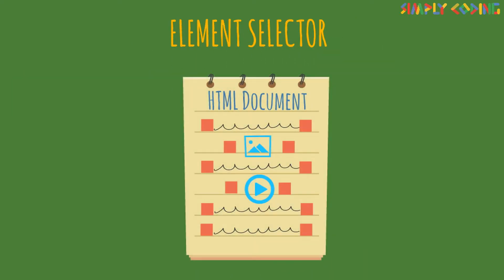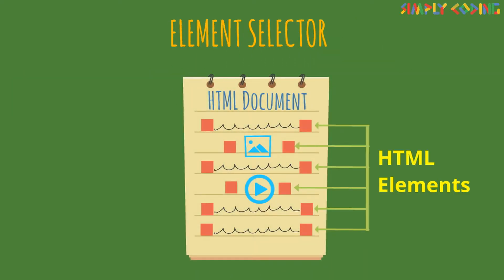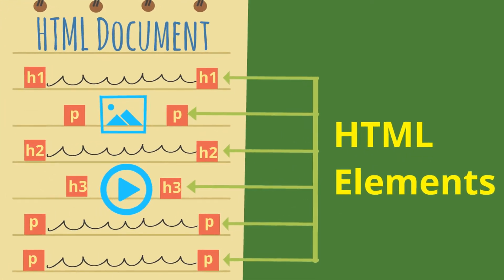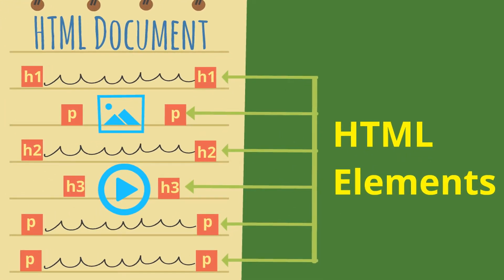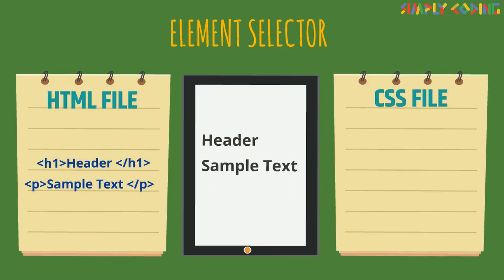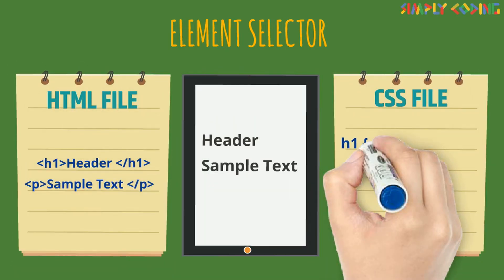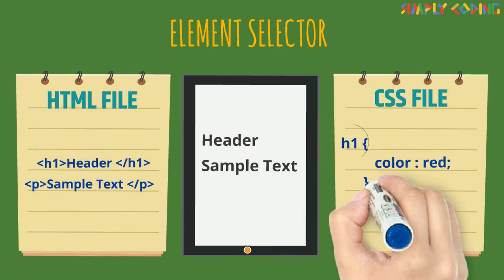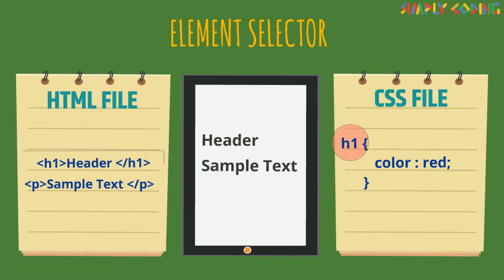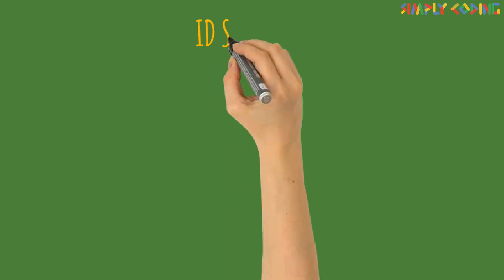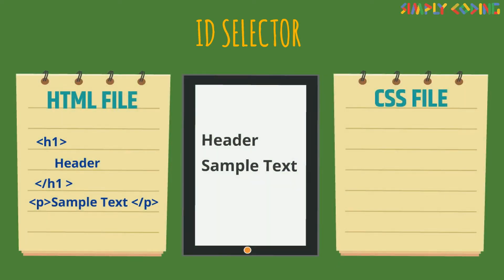Next is the element selector. The element selector selects elements based on the standard HTML element name like P, H1, H6, etc. In this example, since we have picked selector H1, this style rule will apply to all H1 elements in the HTML file.